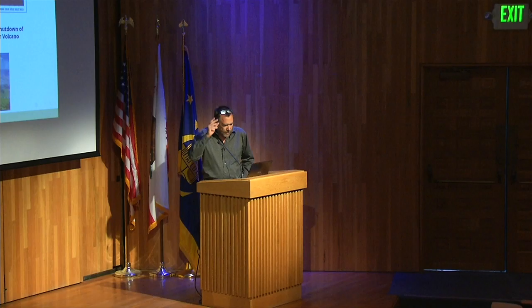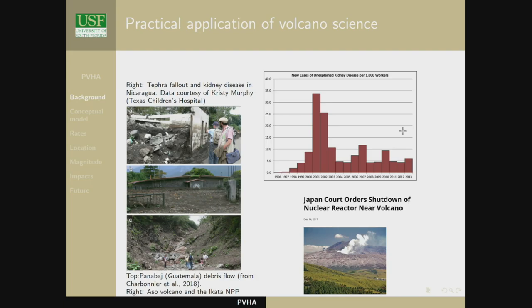I'm going to talk about a few examples based on the discussion yesterday about topics and projects. Over on the left, you see the consequences of a disaster — a non-eruptive event I worked on in Guatemala following Hurricane Stan. Hurricane Stan was a pretty impactful hurricane in Guatemala, dumping about a meter of rain in a 24-hour period, causing a lot of slope instability including on Toliman Volcano.